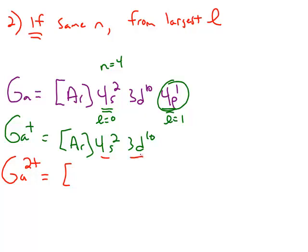And now we have a choice between the 4s and the 3d, so we're going to remove from the larger value of n. And we're going to have 1 electron in the 4s, 10 in the 3d.